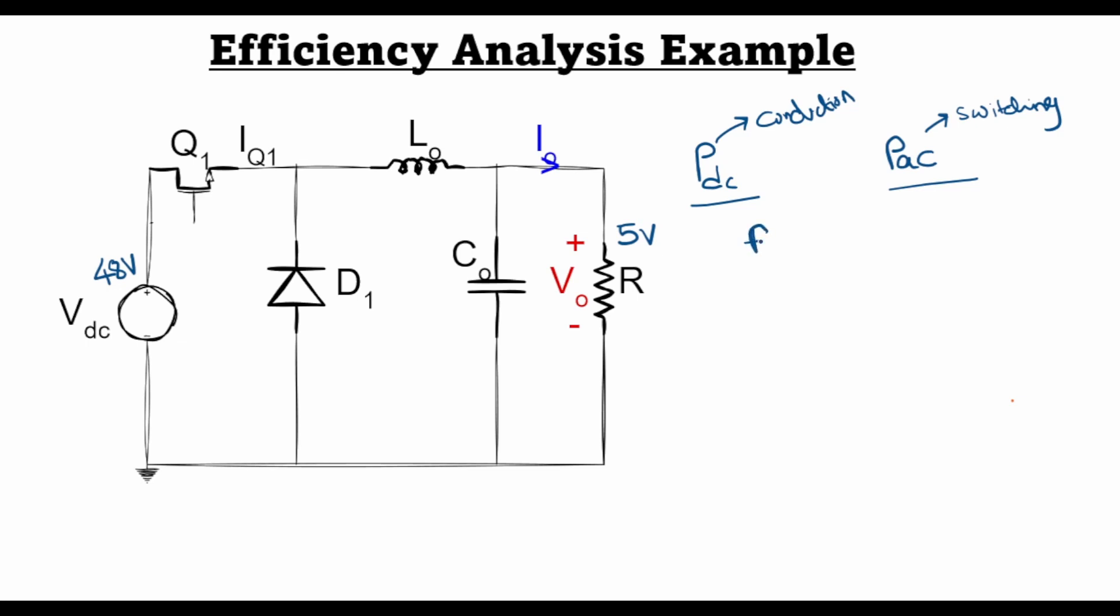We have the information that the switching frequency of the transistor is 50 kilohertz and from here readily we can find out the time period as 1 over 50K which is equal to 20 microseconds.